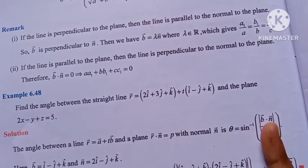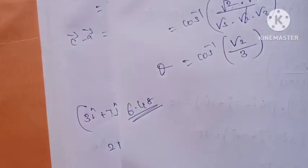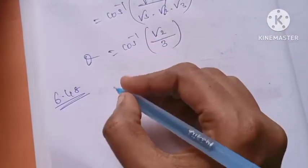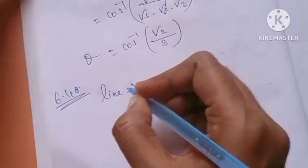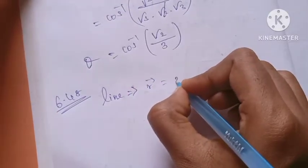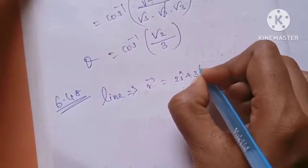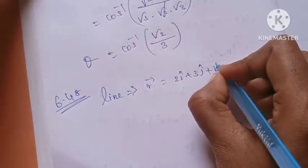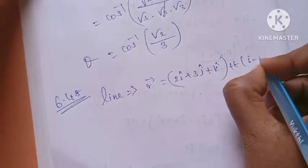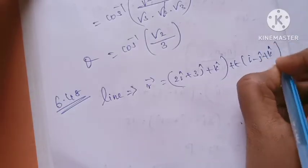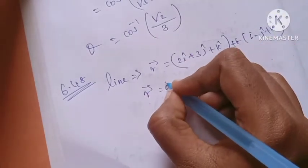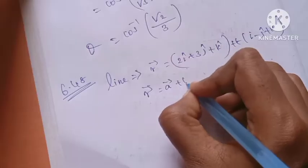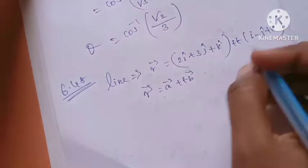First, we will take the line. The line is given as: r vector equals 2i + 3j + k plus t times (i minus j plus k). Looking at the standard form of a line, r vector equals a vector plus t times b vector. So we will identify the b vector from this equation.